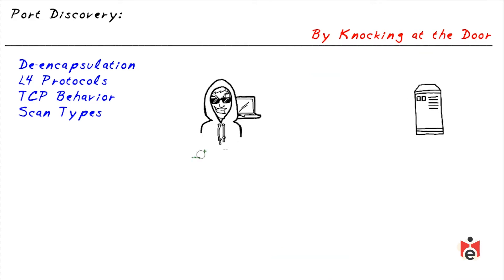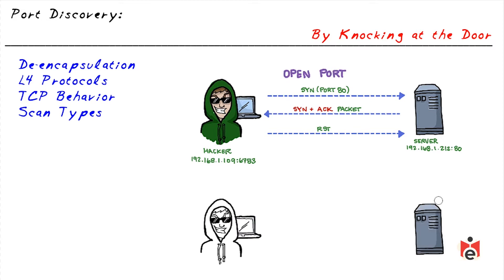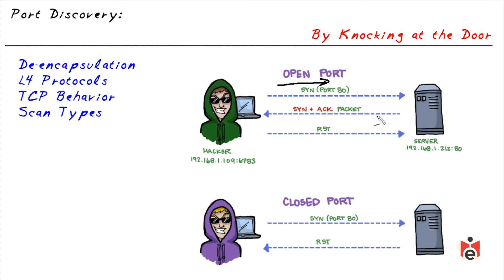In port discovery we can use TCP behavior to knock on the door. If an attacker wants to discover whether port 80 is open, he sends a TCP SYN request on port 80. If a SYN-ACK comes back, the port is open, likely indicating HTTP on well-known port 80. The hacker can then send a RST — essentially saying 'never mind' — allowing a very fast port scan without tying up resources.